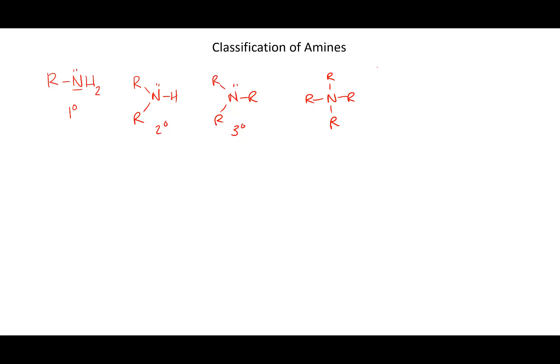If you have four alkyl groups attached to the nitrogen, you have what is called an ammonium - basically an ammonium salt, because there's always a counter ion for that N-plus. It might be a bromine, chlorine, or some halide ion.